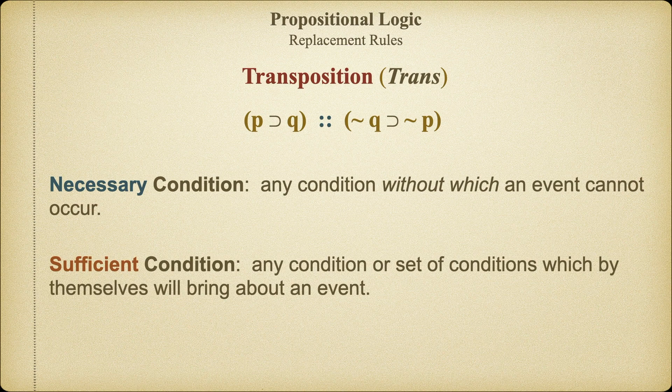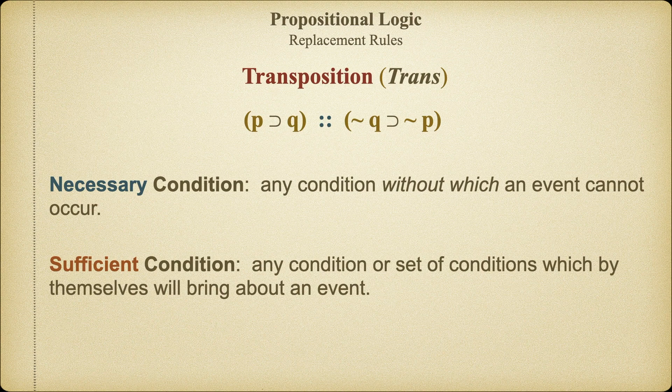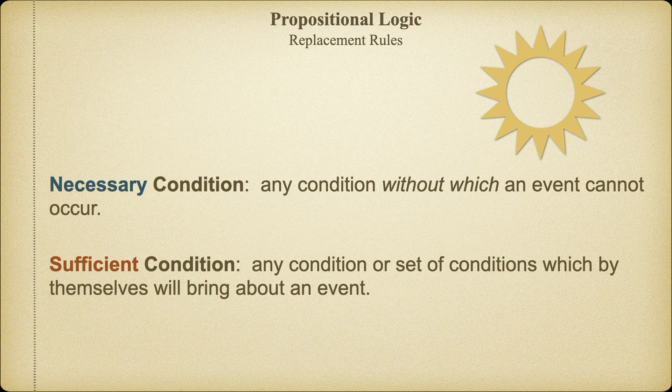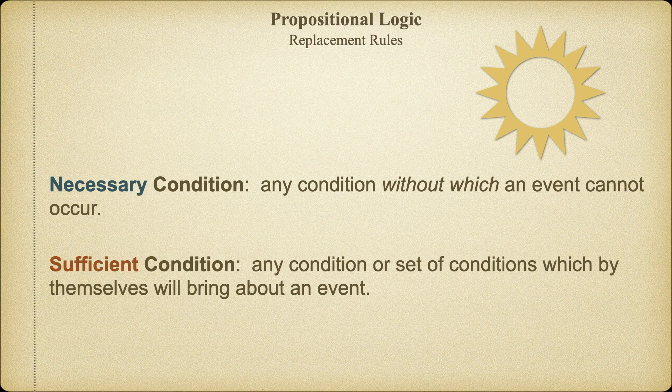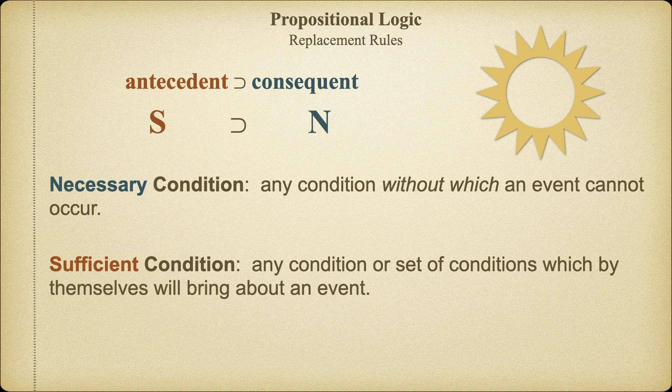Or, take the example of fire. It's a necessary condition that oxygen be present in order to get combustion. Oxygen is a necessary condition for fire. But, just because oxygen is present doesn't mean there will be a fire. So, oxygen is necessary, but not sufficient for fire. In order to remember the relationship between necessary and sufficient conditions, always think of the sun. S-U-N. Sufficient, then necessary. The antecedent of a material implication is a sufficient condition for the consequent. And the consequent is a necessary condition for the antecedent. So, the sun will always make things clear.